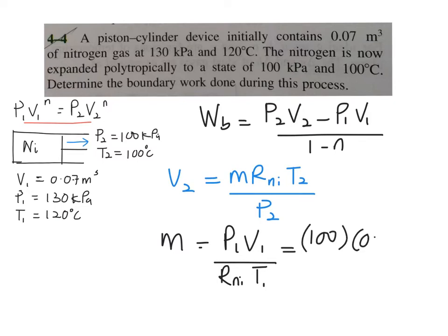So you plug in all the values, which is your table A2, where you have a list of your property that already tabulated for you, such as gas constant R, your specific heat at constant volume, specific heat at constant pressure. So your R for nitrogen, if I check here, is around 0.2968 kJ per kg kelvin.